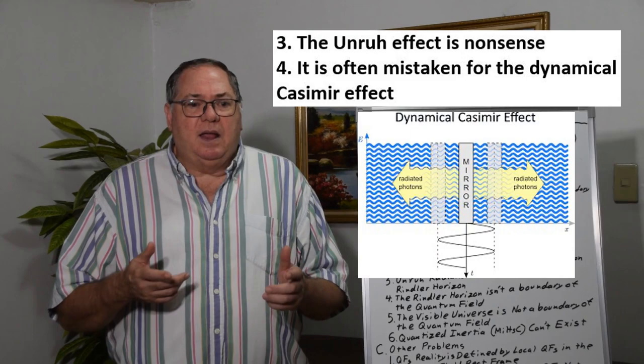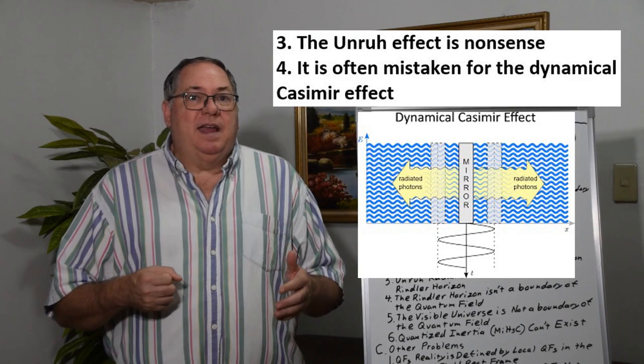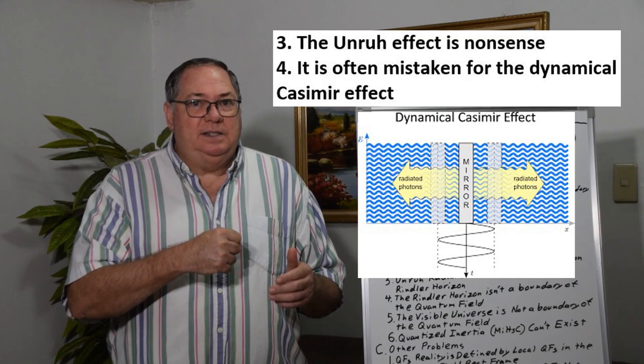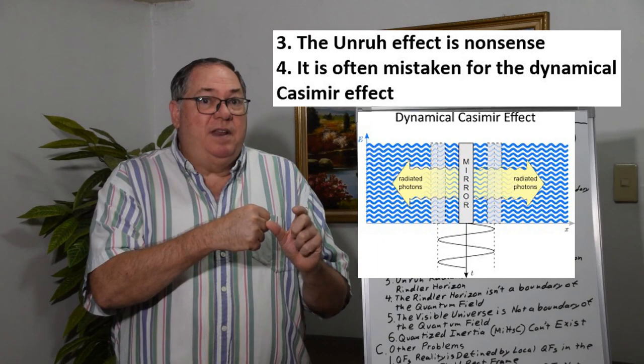It's also confused with the dynamical Casimir effect, which isn't really a Casimir effect but it's called that. You can think of that in terms of the rocket ship accelerating through space - it has an opportunity of hitting the quantum fluctuation before the quantum fluctuation annihilates.